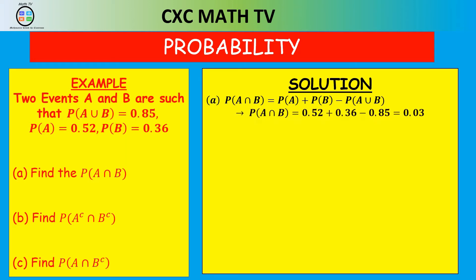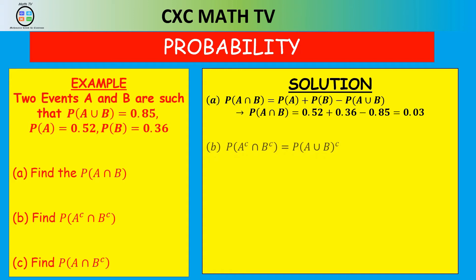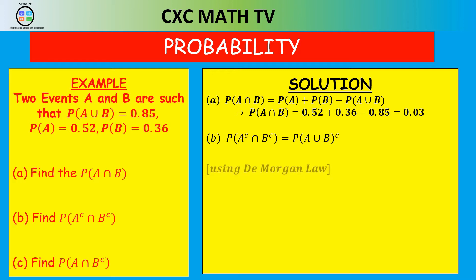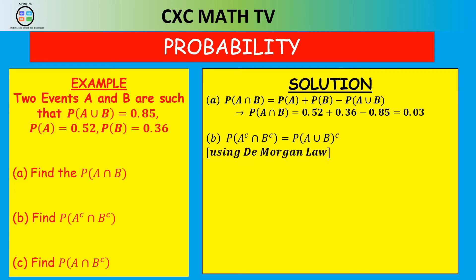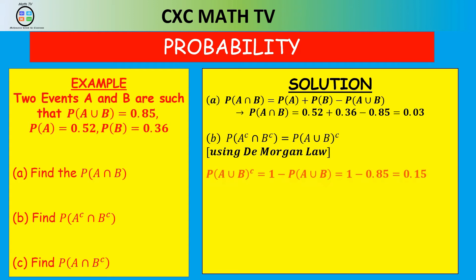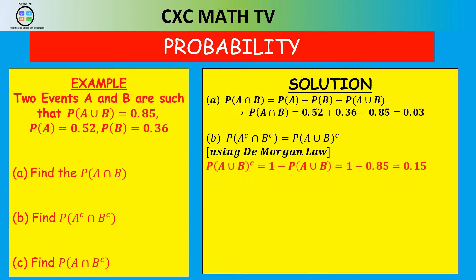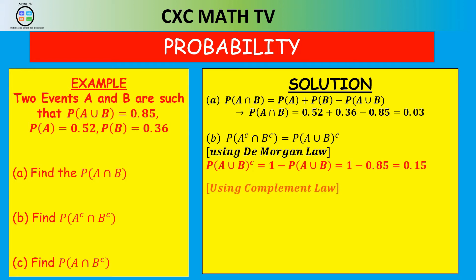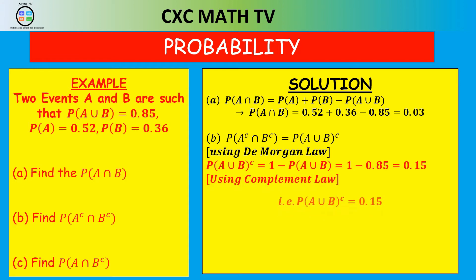For part B, the probability of A complement intersect B complement equals the probability of (A union B) complement by De Morgan's Law. Using the complement law, that is 1 minus the probability of A union B, which is 1 minus 0.85 equals 0.15. So the probability of A complement intersect B complement is 0.15.